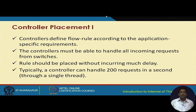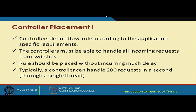Controllers define the flow rule according to application-specific requirements. In SDN, the control logic is taken care of by the control plane — the control logic is separated out. As a result, the controller knows what has to be done with a particular flow and controls the overall flow in the network. The controller must be able to handle all incoming requests from the switches, and rules should be placed without incurring much delay.